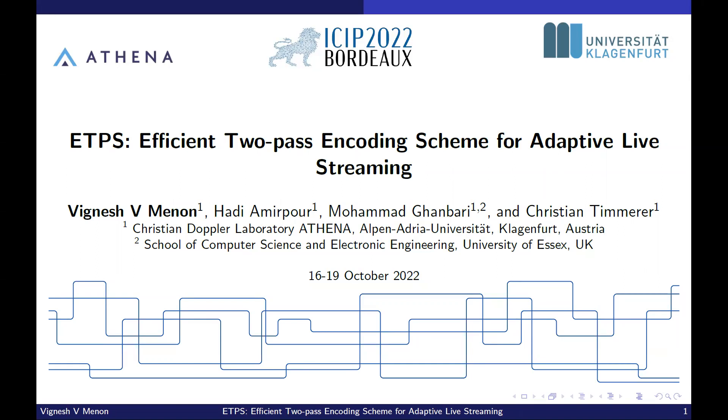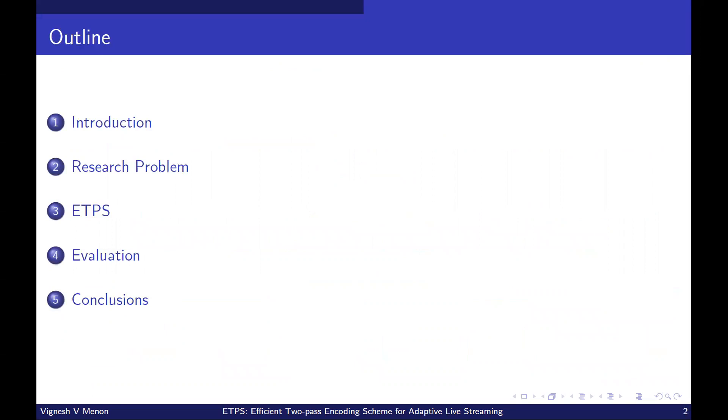Welcome to the presentation of the paper titled ETPS, Efficient Two-Pass Encoding Scheme for Adaptive Live Streaming, which is also co-authored by Hadi Amirpur, Mohamad Ghanbari, and Christian Timmerer. In this presentation, I will introduce the premise of this work, the research problem we try to address, and the proposed ETPS scheme. We shall discuss the evaluation of the scheme and then conclude the presentation.